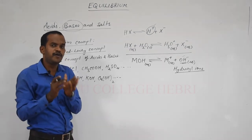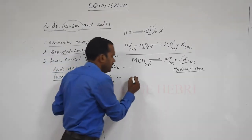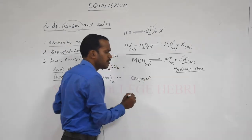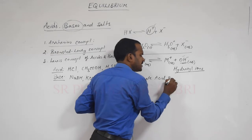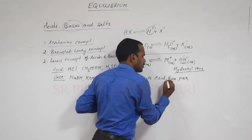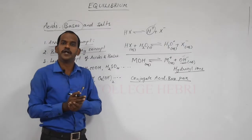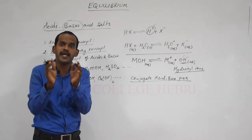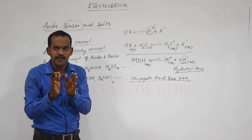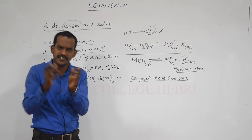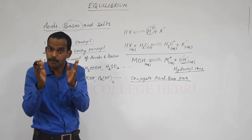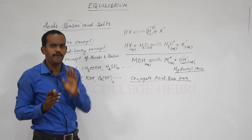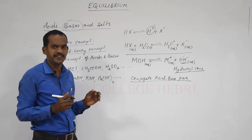Here comes the concept of conjugate acid-base pair. When you study Bronsted-Lowry theory, this is an important aspect. A conjugate acid-base pair is a pair of acid and base which differ by a proton — that is, H+. If two compounds, one acid and one base, differ by a proton, then they are called a conjugate acid-base pair.